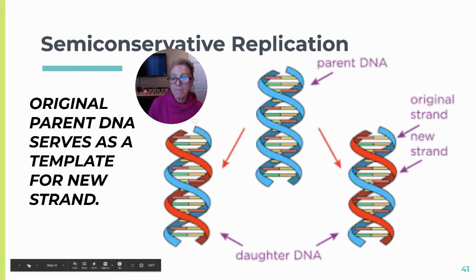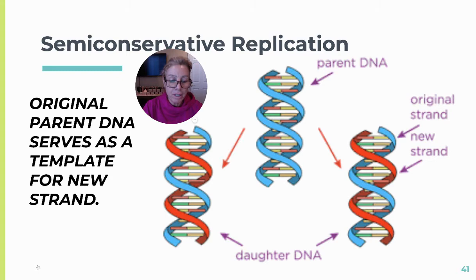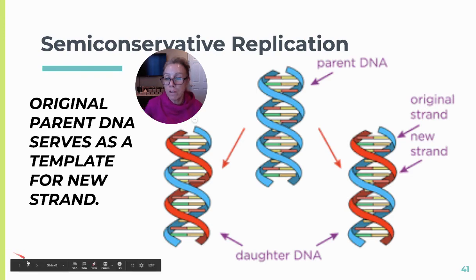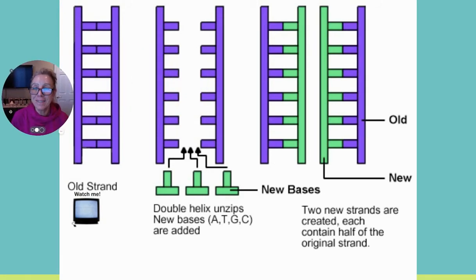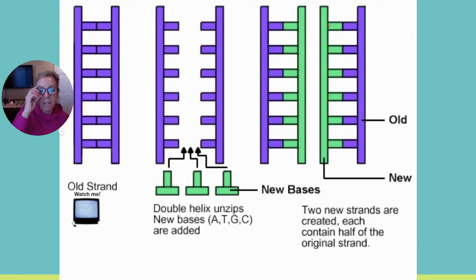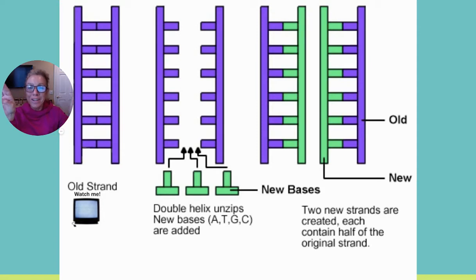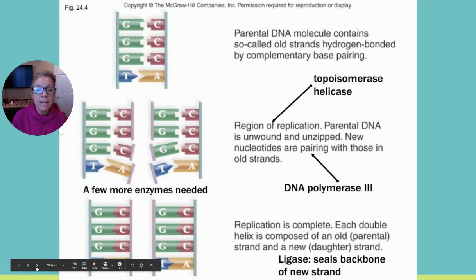This is called semi-conservative replication because each original strand serves as a template for the new strand — you always get one old and one new strand together. The parent strand is shown in blue and the new strand in red. Each of the two resulting double helices contains one old strand from the parental DNA and one new strand. These two new identical ladders are your sister chromatids, held together by centromeres and separated during anaphase.